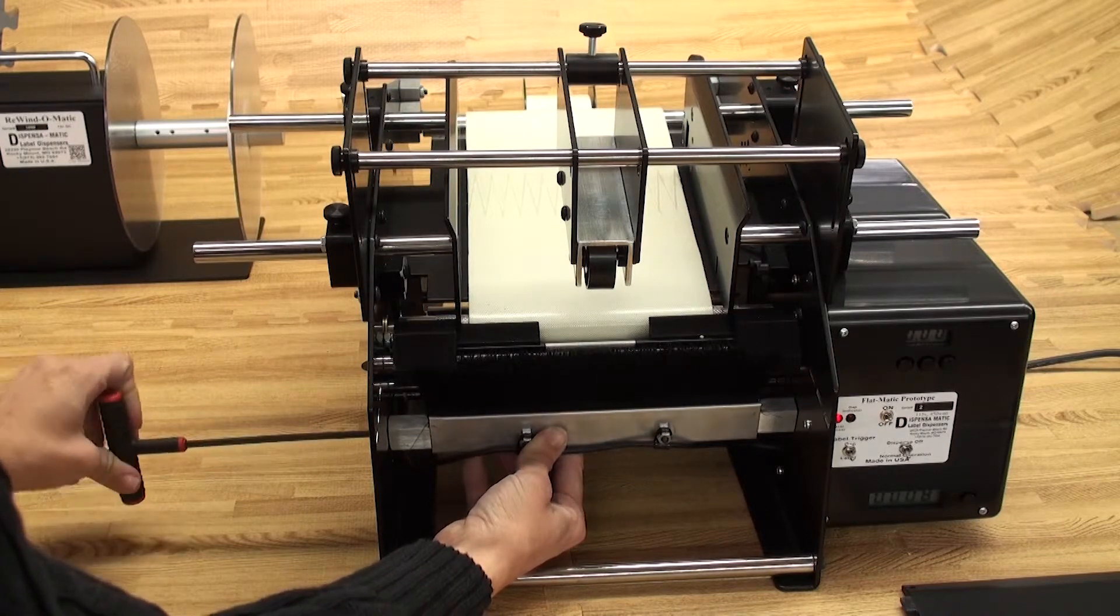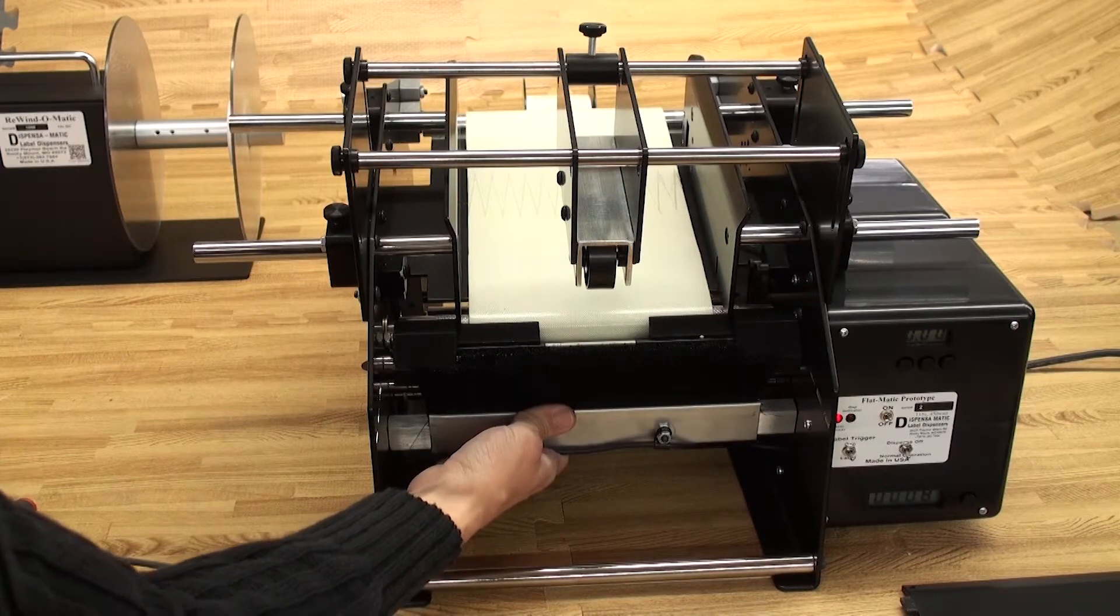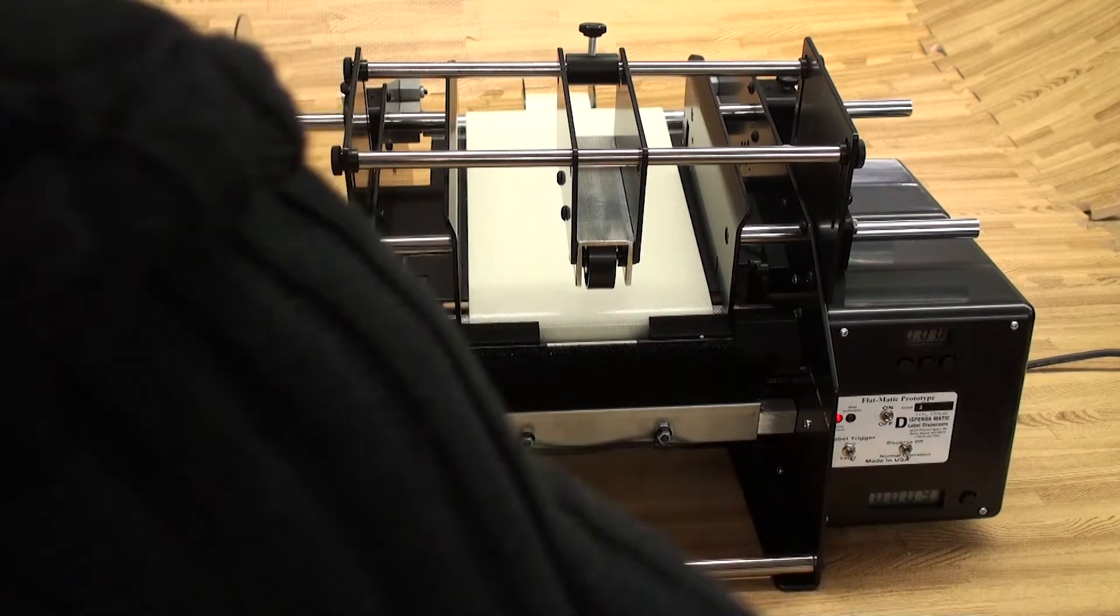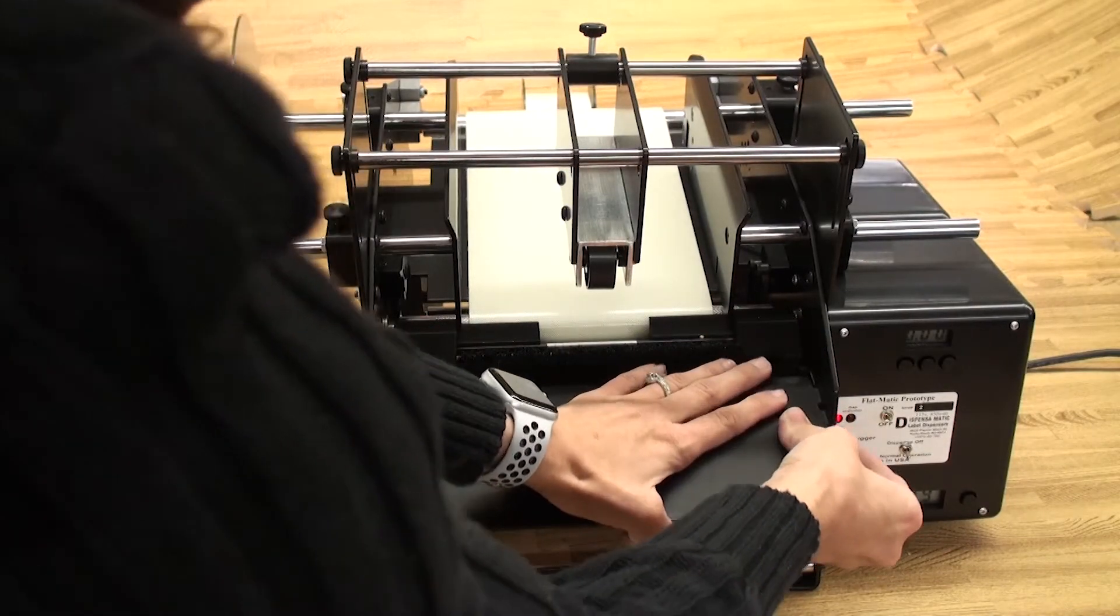Once you have the desired height, tighten the screw on the left hand side frame. Tighten until you feel a slight resistance when moving the brush. Reinstall the front plate. Left side goes in first and then push down and to the right.